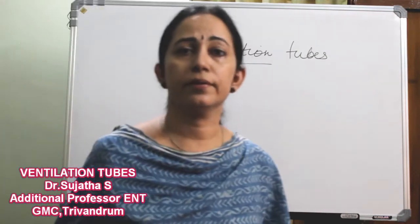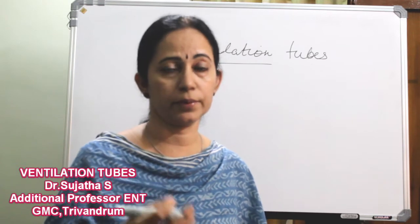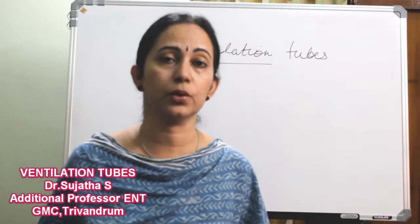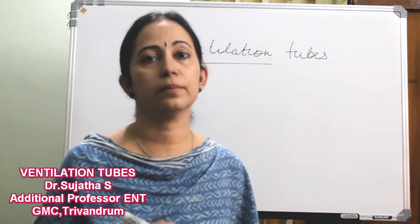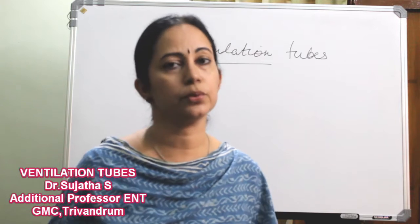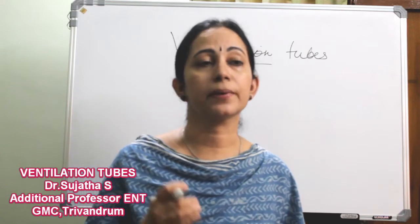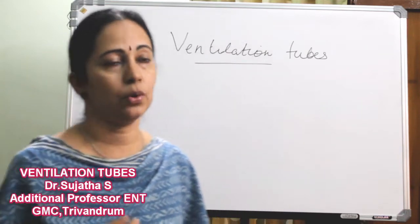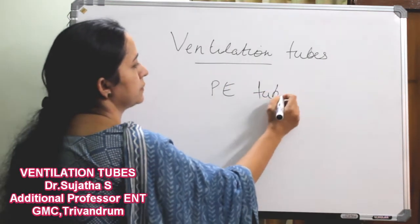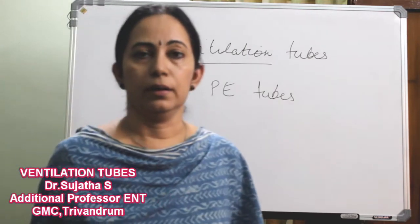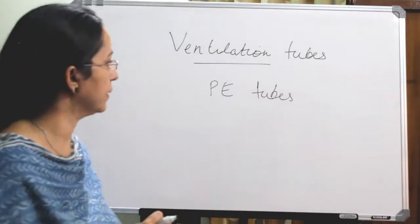Ventilation tubes are also called Venn tubes, myringotomy tubes, tympanotomy tubes — because the tube is inserted after myringotomy into the tympanic cavity — and they are also called pressure equalizing tubes, often abbreviated as PE tubes. These are all synonyms for ventilation tubes.